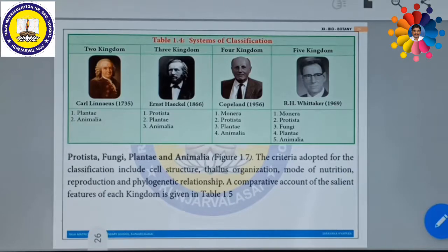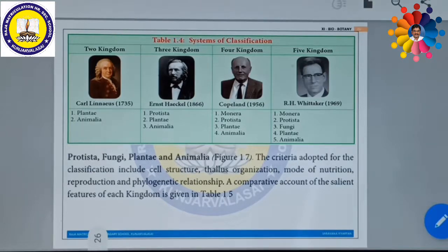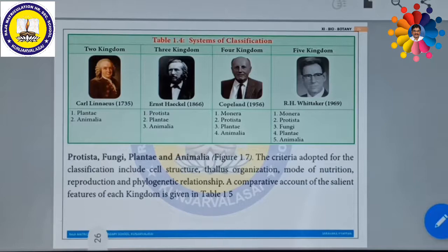Then Copeland, in the year 1956, classified all the living organisms into four kingdoms: Monera, Protista, Plantae, and Animalia. Then R. H. Whittaker, in the year 1969, proposed five kingdom classification. He classified all living things into five kingdoms, namely Monera, Protista, Fungi, Plantae, and Animalia. We shall go through Whittaker's five kingdom classification in detail.